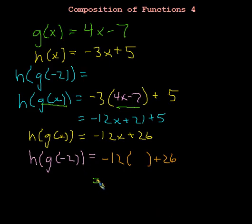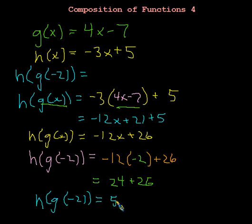So this will be, we'll go ahead and put the negative 2 here. So that gets us positive 24 plus 26. And so what that tells us is that in the end, h of g of negative 2 is equal to 50. And if I wanted to plug many more numbers into here, I could just evaluate them all that way without going through all the steps that I showed previously.